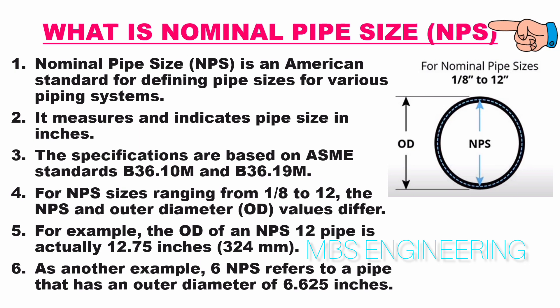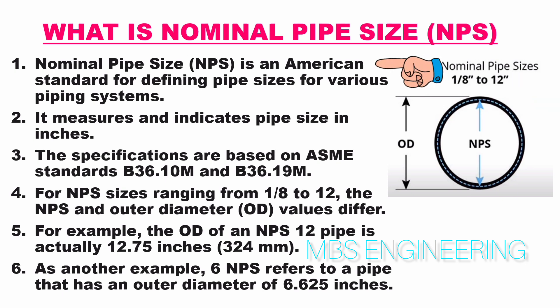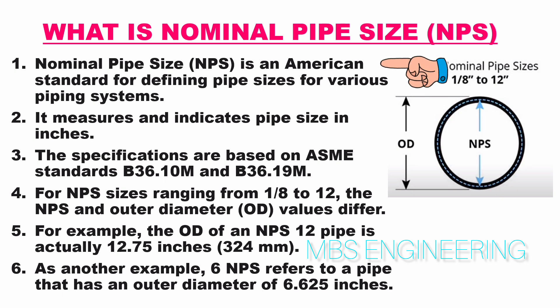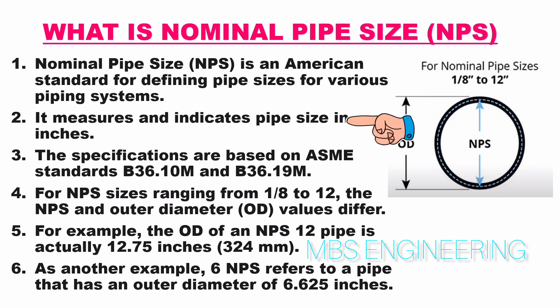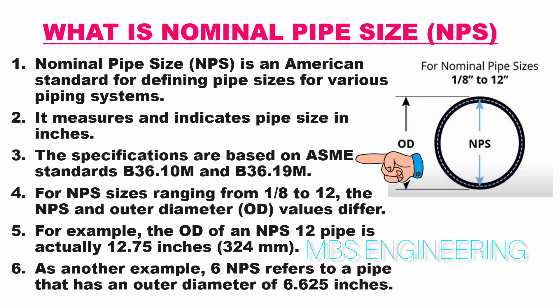First, we will understand what is nominal pipe size, NPS, for pipes below 14 inches. NPS is an American standard for defining pipe sizes for various piping systems. It measures and indicates pipe size in inches. The specifications are based on ASME standards B36.10M and B36.19M.